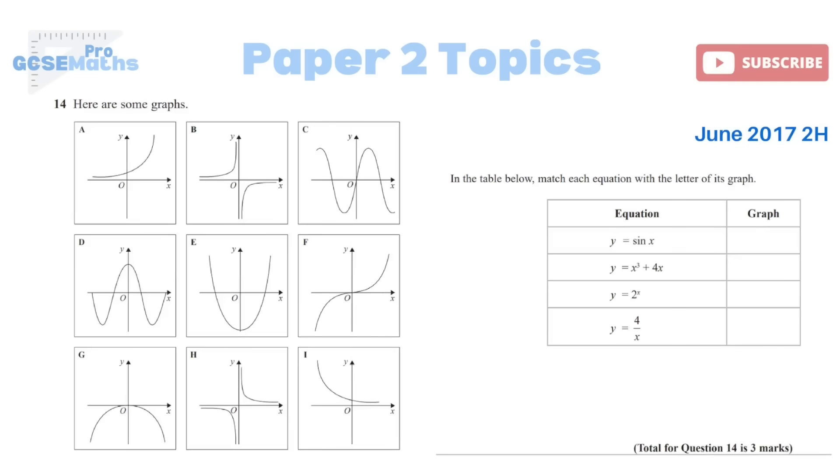We've now got a question on recognising graphs, matching them up with their equation. Match each equation with the letter of its graph. Let's first of all identify which ones are trigonometric graphs. We've got this one here as a trig graph, and then we've also got D as a trig graph. So out of these two, we need to know which is the sine graph. Now the sine graph always starts at 0, 0. And the cos graph looks the same, but it starts at 1. So this one is the cos graph. This one is the sine graph. So that would be C.